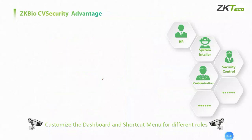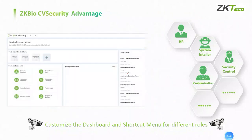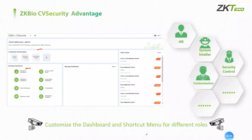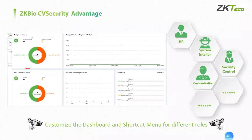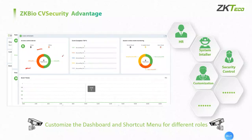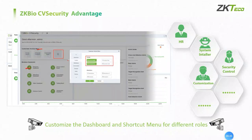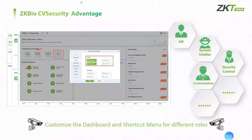In addition to intelligent video and intelligent scene, ZKBioCVSecurity has also added customized dashboard functions and a shortcut card kit. We have customized dashboards for each module, such as attendance, visitor, and access control. All dashboards will have data statistics — for example, the attendance dashboard will show personal attendance statistics and device status. The access control dashboard includes access control device status and event trends. With the shortcut card kit, we can choose what widgets we want to display.